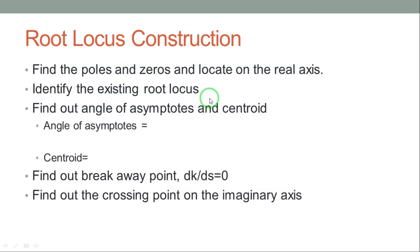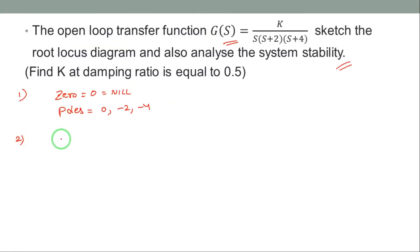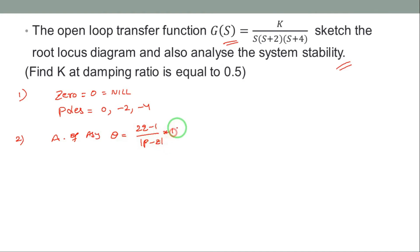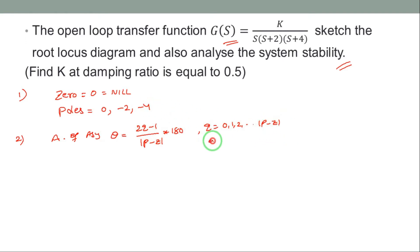Step 3: Find the angle of asymptotes and centroid. The angle of asymptotes formula is: θ = (2q+1) / |P−Z| × 180°, where q starts from 0, 1, 2, and so on up to (P−Z). The number of poles P is 3 and number of zeros Z is 0, so P−Z = 3, meaning q takes values 0, 1, 2.